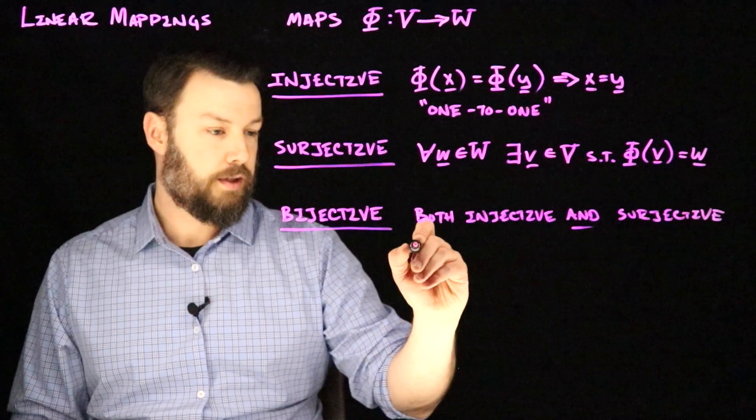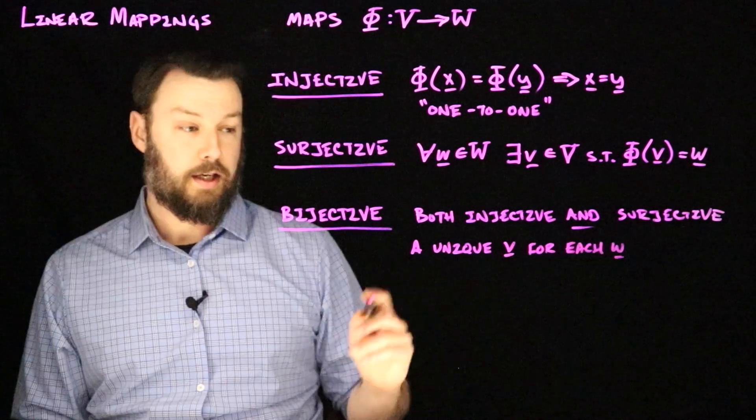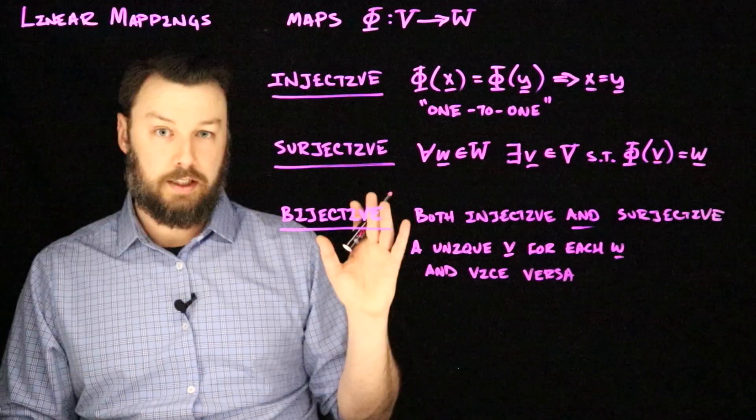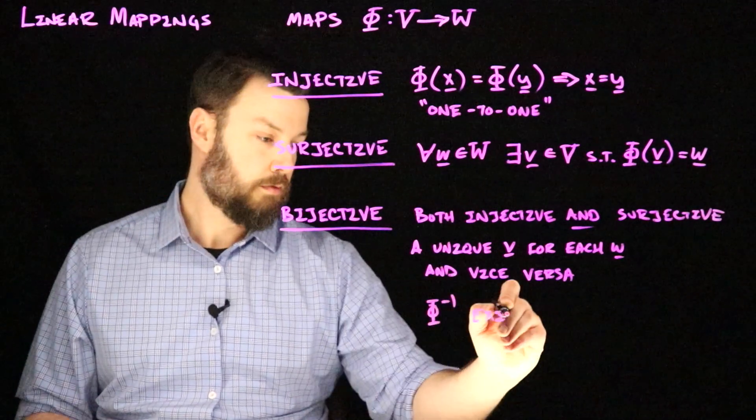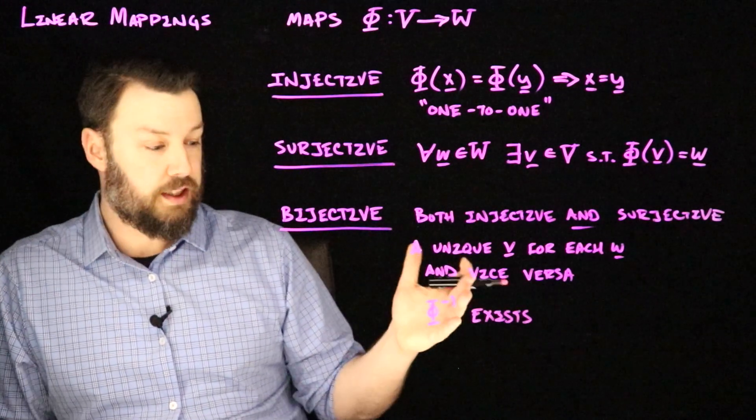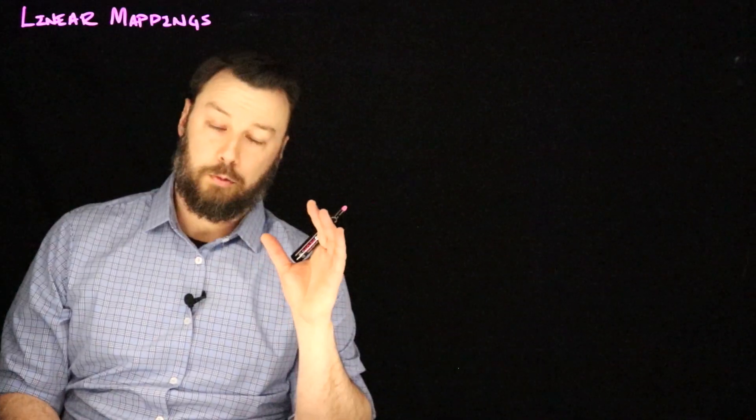So we could say there is a unique V for each W and vice versa. In this situation, then an inverse for Phi exists. And that makes sense because it means that there is some way to go back through given a W. Now that we know what injective, surjective, and bijective mean, we can now talk about some more fancy math terms for linear maps.